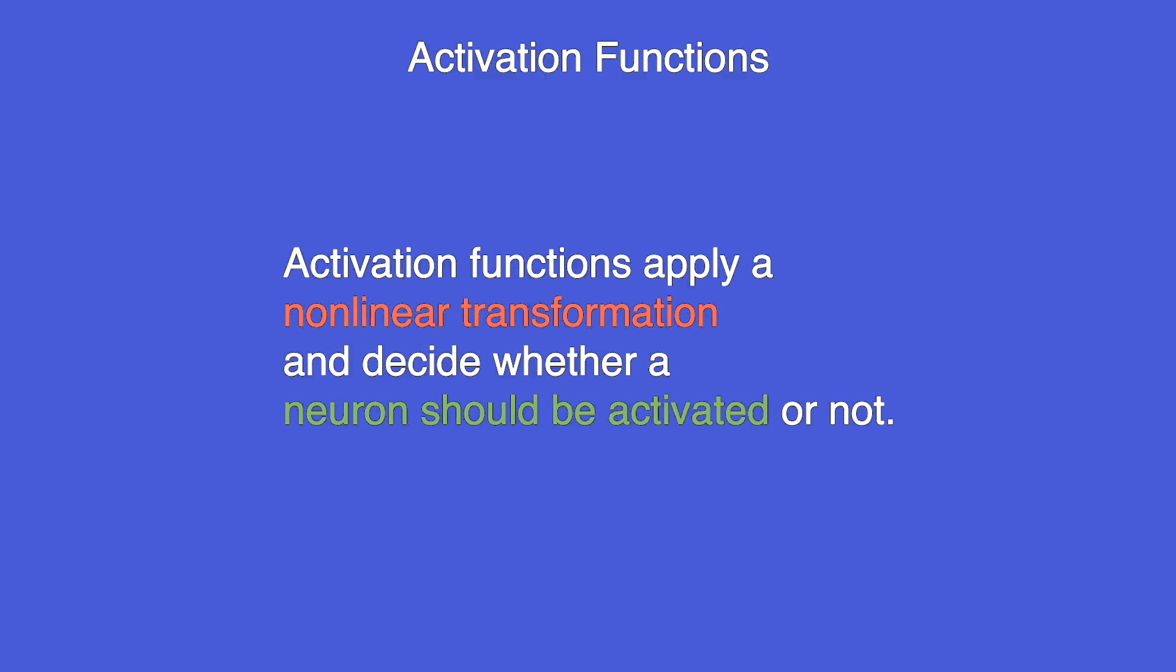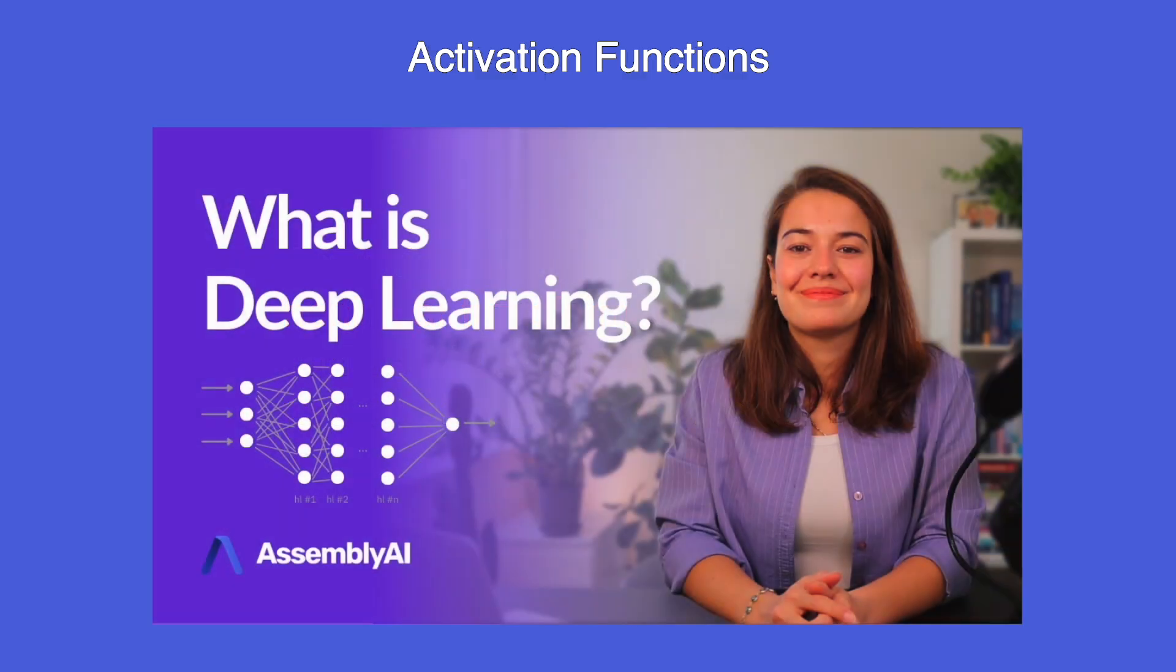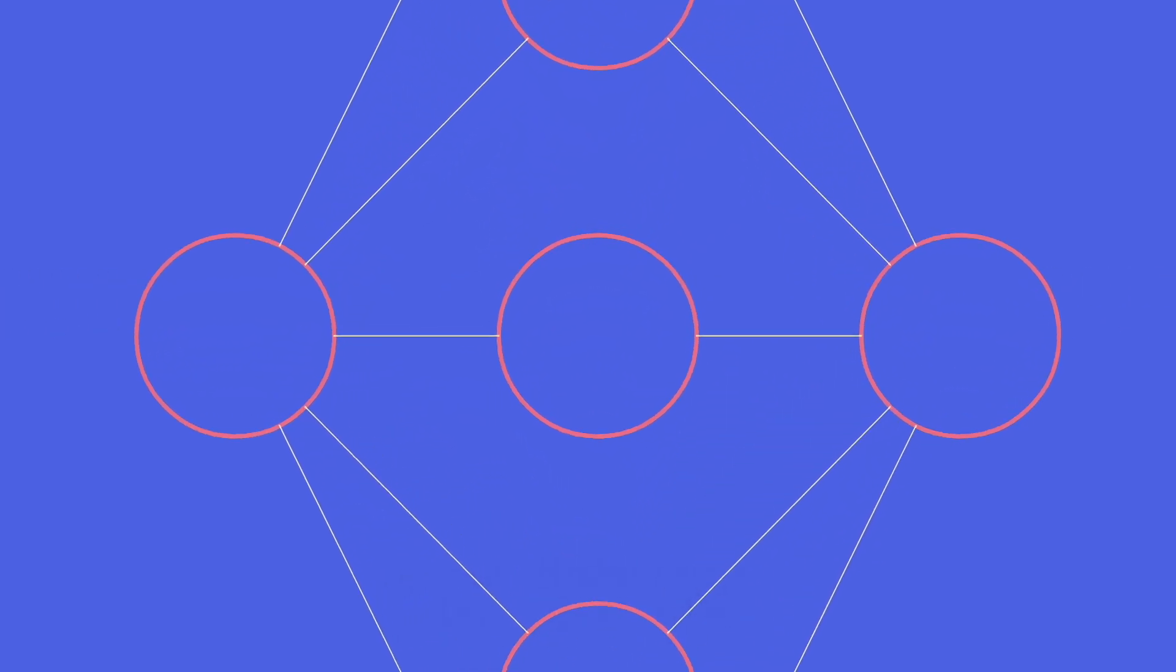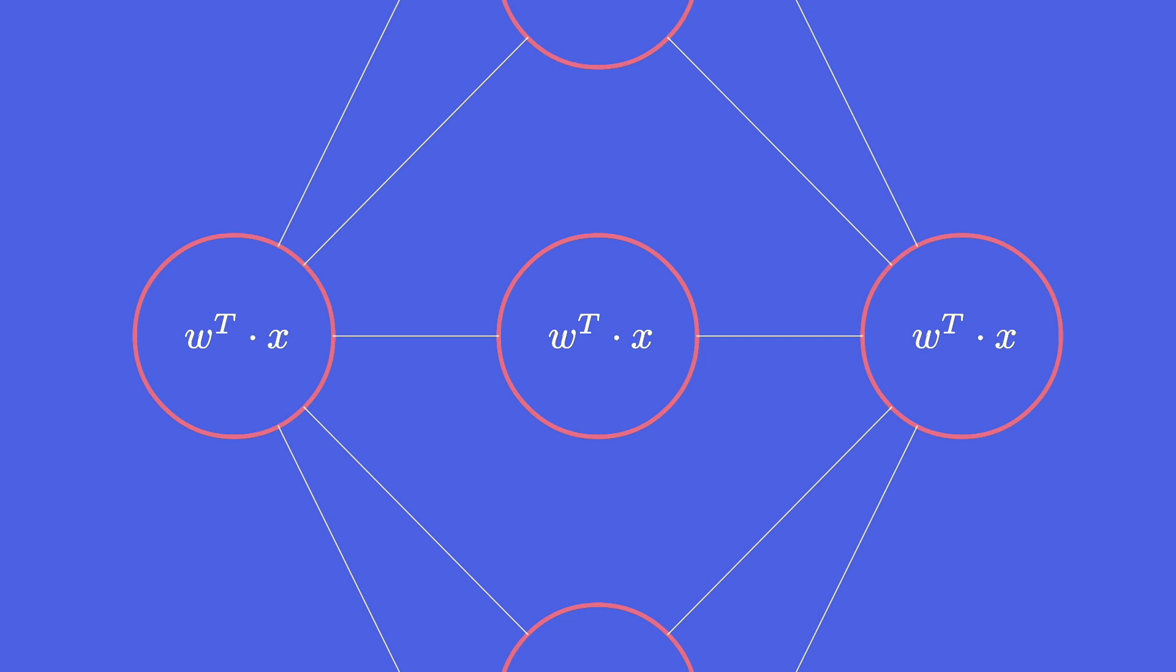In a previous video we learned how neural networks work. In a neural network we have the input layer where we accept an input and an output layer that gives the actual prediction or the outcome of the network. And in between we have the hidden layers. All of these layers consist of neurons and at each neuron we apply a linear transformation. It multiplies the input with some weights and maybe adds a bias.